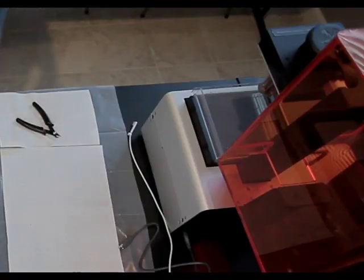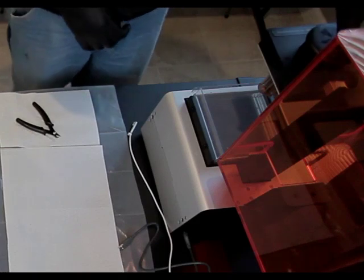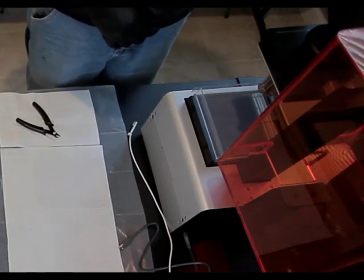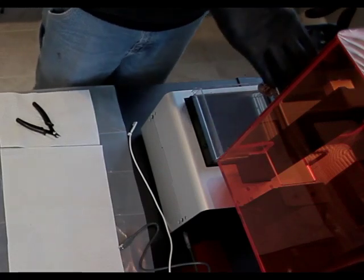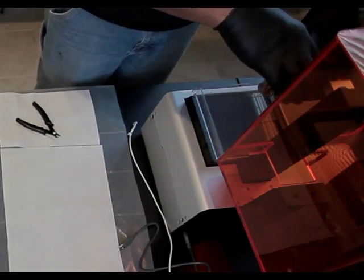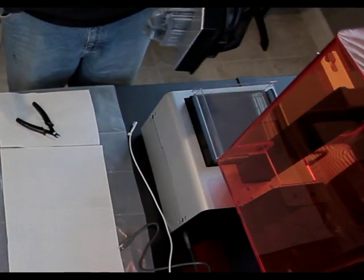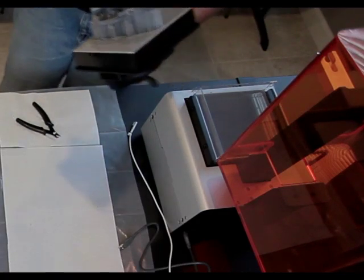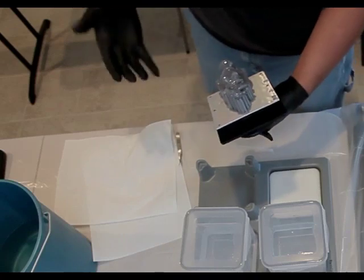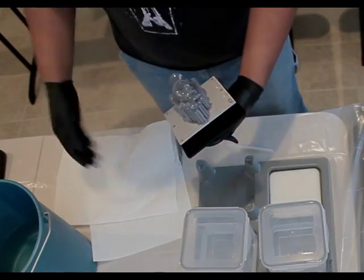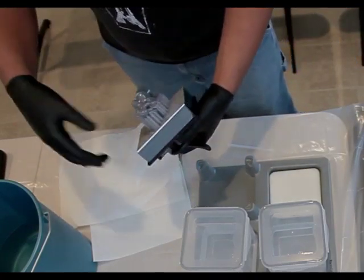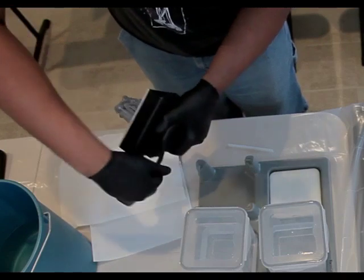So first thing we're going to do is take it off the machine. You click this little button open. And gently but firmly, make sure that you have your character or your build plate in hand so you don't drop it. Okay, and then I always forget this part, but close that.